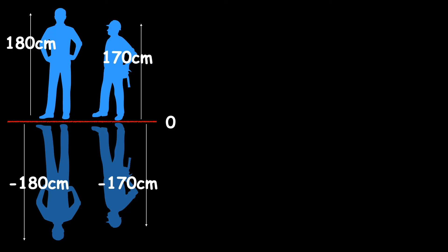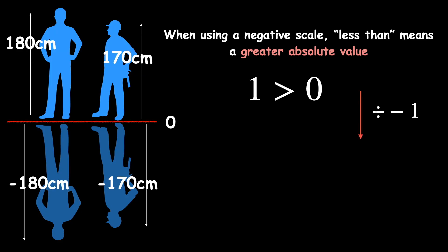And then we can look at the classic example where you have 1 greater than 0, you can divide by negative 1, so then you get negative 1 greater than 0, which is clearly wrong, and then you clearly need to flip the inequality to say negative 1 is less than 0.